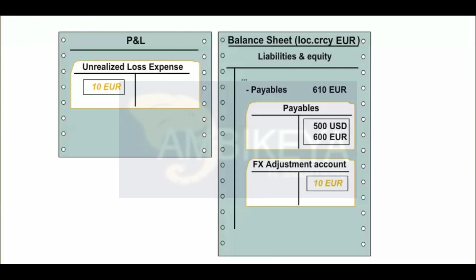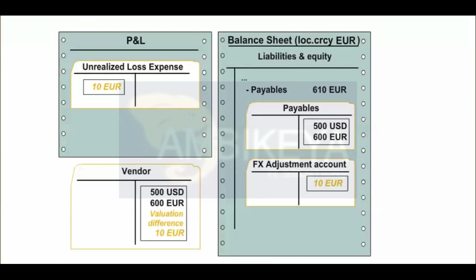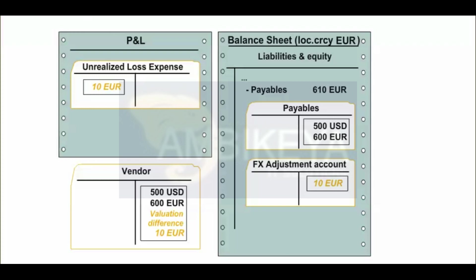A foreign currency valuation is necessary if vendor accounts contain open items in a foreign currency. The amounts of these open items are translated to the local currency at the time they are entered using the exchange rate valid on the posting date. The exchange rate is probably different at the time of closing, so open items need to be valuated again. A program valuates the open items using the new exchange rate and enters the valuation difference in the valuated line items. It creates the valuation postings in either of the following ways: expense from foreign currency valuation to balance sheet adjustment account, or balance sheet adjustment account to revenue from foreign currency valuation. Note: a valuation document cannot post directly to the payable account because reconciliation accounts cannot be directly posted to. For this reason, postings appear in an adjustment account which is displayed in the balance sheet item of the associated reconciliation account.